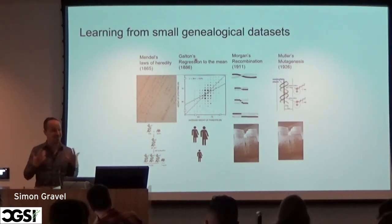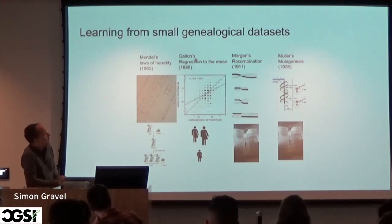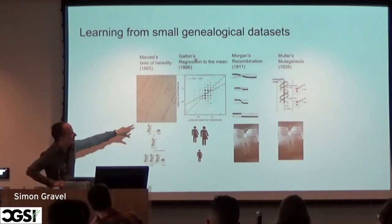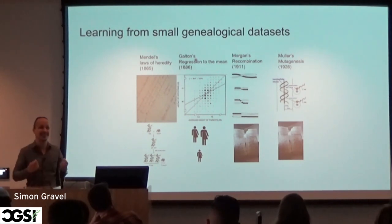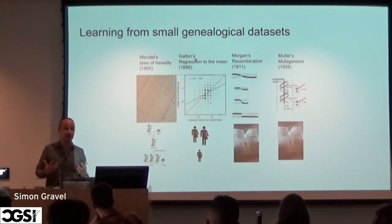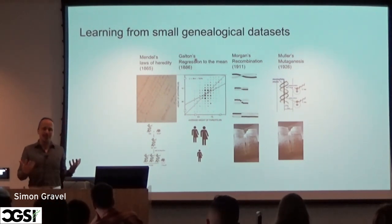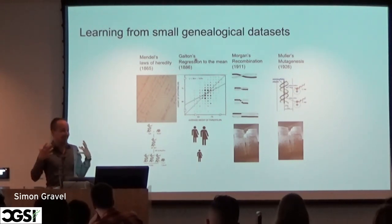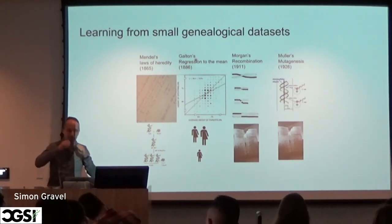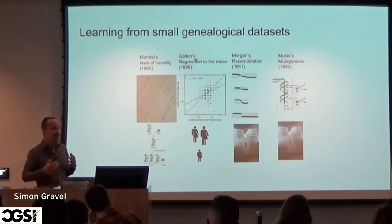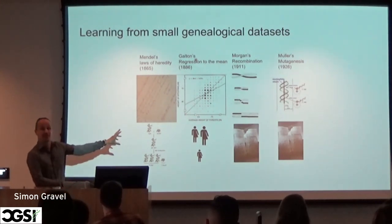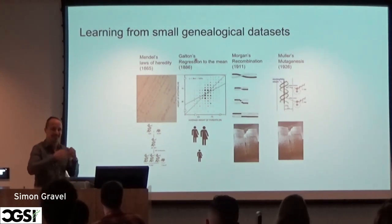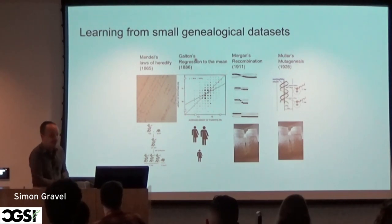So small genealogies have been really useful. And if you work in any of these fields — like complex trait architecture, recombination, or mutation — you'll know that we don't know these things really well yet. We have big areas of uncertainty, which maybe we could resolve by just having larger families. If we had large enough families, maybe we'd be able to figure out mutation rates, exactly where recombinations occur, and resolve some of these uncertainties. Complex trait architecture is even more so, because you can try to pick apart environmental and genetic components.